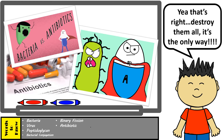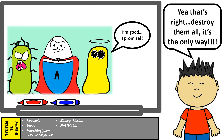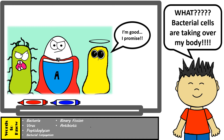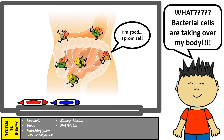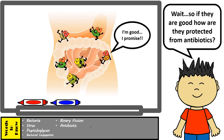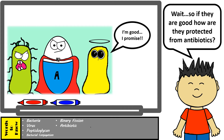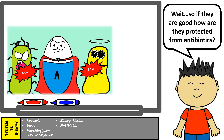Not all bacteria living inside of us is harmful. In fact, we have more beneficial bacterial cells in our bodies than we do actual human cells. We have a lot of beneficial bacteria inside our bodies — they are perfect examples of mutualistic relationships. The most common beneficial bacteria are those found in our intestines, also known as intestinal flora, which help us further digest food. Because antibiotics are not very selective in what bacteria they kill, they destroy all bacteria in close proximity — killing not only the harmful bacteria but also the beneficial bacteria.